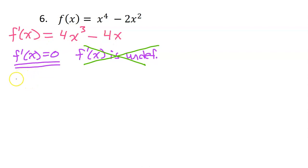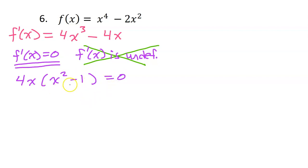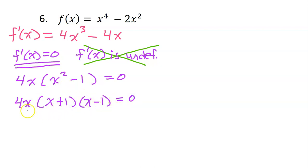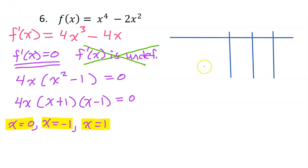This is factorable. So I'm going to factor this as I set it equal to 0. We will have 4x out in front, and then x squared minus 1 is equal to 0. This can be factored more as the difference of two squares. So x plus 1 times x minus 1 is equal to 0. Setting each of these factors equal to 0, I get the following three critical values: x is equal to 0, x is equal to negative 1, and x is equal to positive 1.